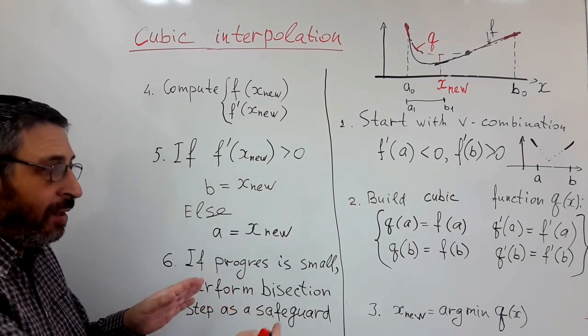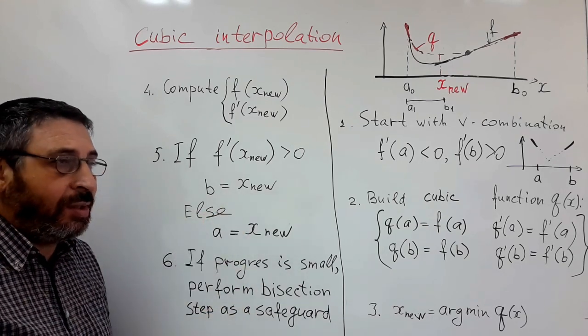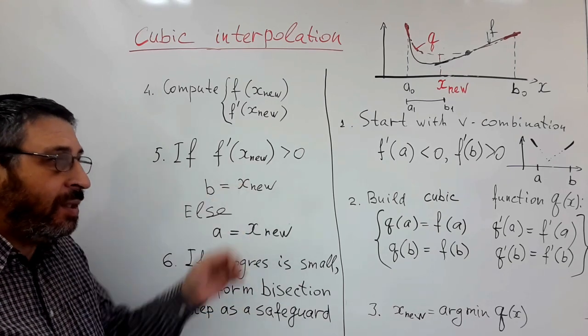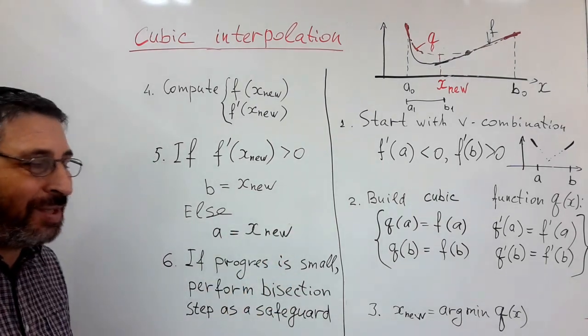But when we are close to solution, usually cubic iterations converge very fast. The method is one of most practical methods for one-dimensional optimization.